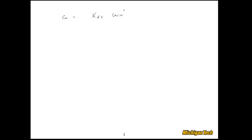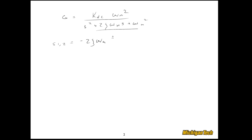Let's explore this form a little bit more. I'll rewrite it here: G equals kdc·ωn squared over the denominator. And what we'll do is go ahead and solve for the poles of this thing. So finding the roots of that equation, I would get negative 2ζωn plus or minus that quantity squared minus 4 times the last term, all divided by 2.